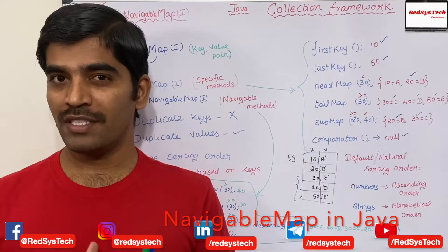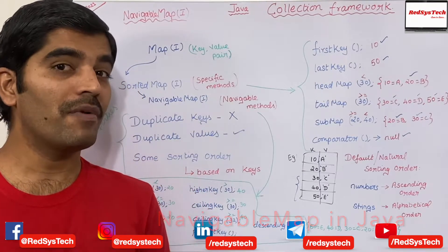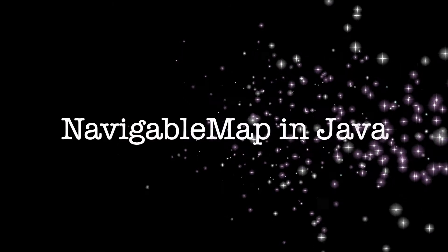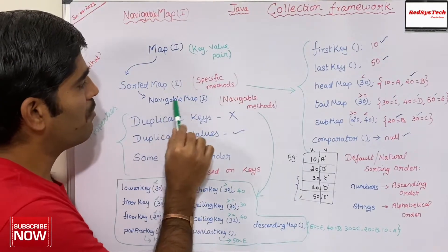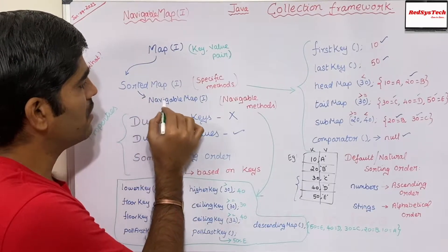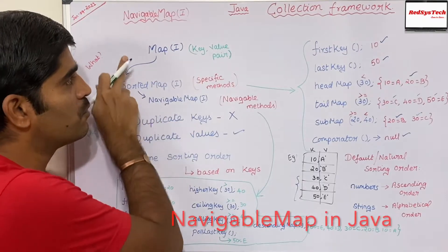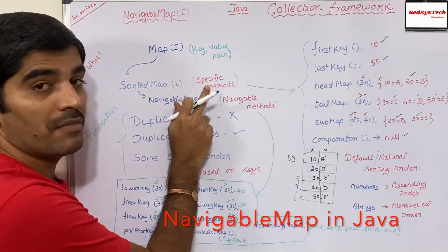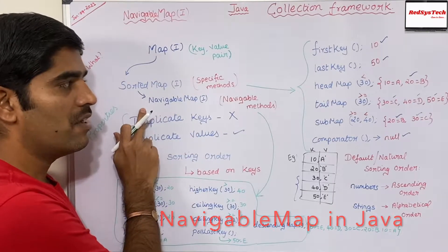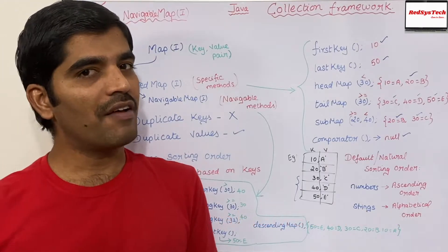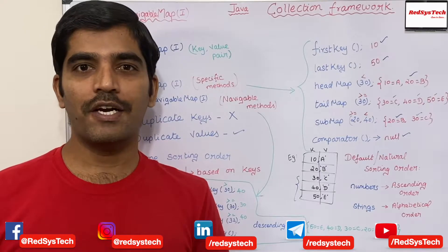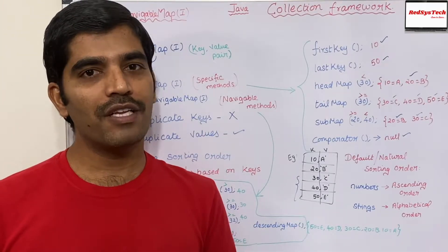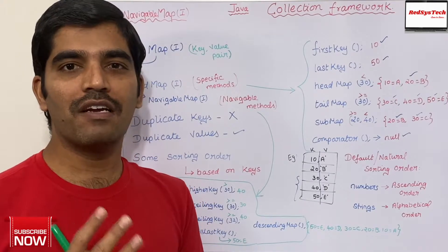In our previous videos, we have learned about NavigableSet in the collection framework. Similar to that, there is a NavigableMap under the map interface. NavigableMap is the child interface of SortedMap, and it actually comes under Map. So the Map interface has key-value pairs, SortedMap is a child interface of Map with some specific methods, and NavigableMap is a child interface of SortedMap containing navigable methods. Whenever there is a navigable keyword, it means the Oracle team decided to add extra methods to navigate between key-value pair objects inside the collection framework.